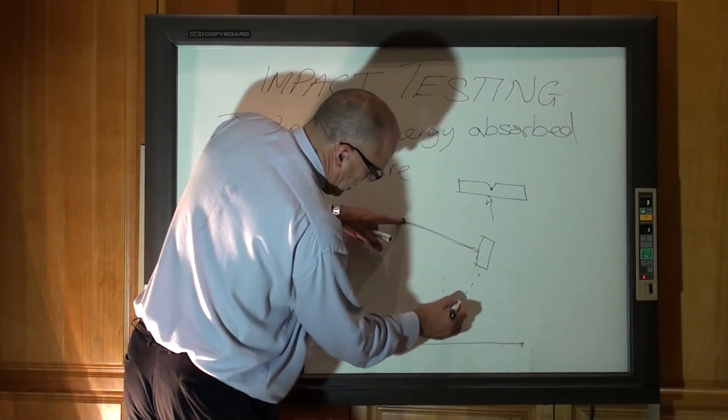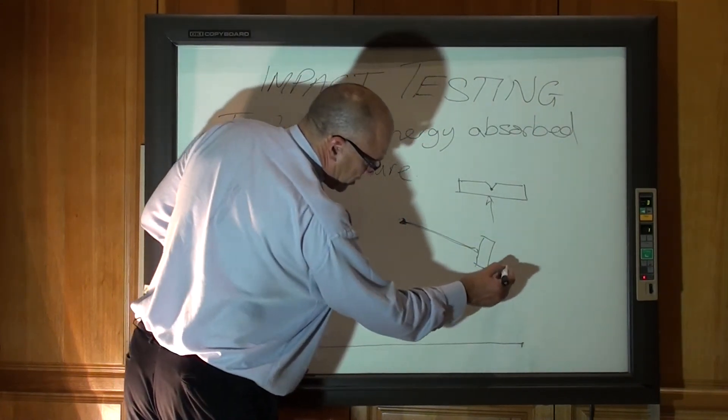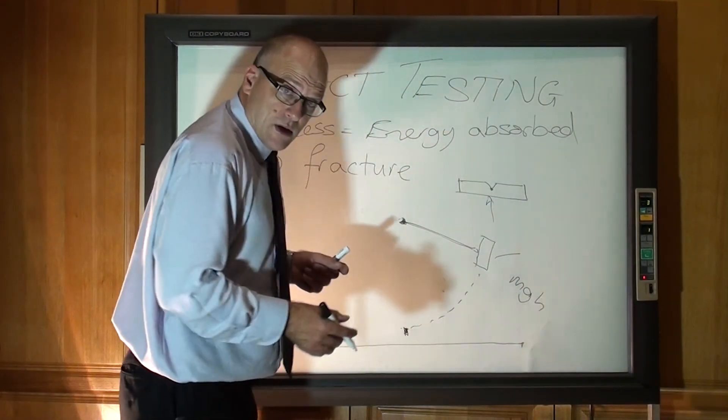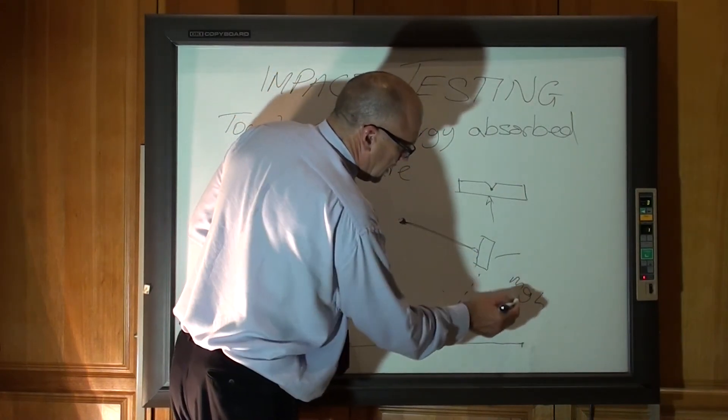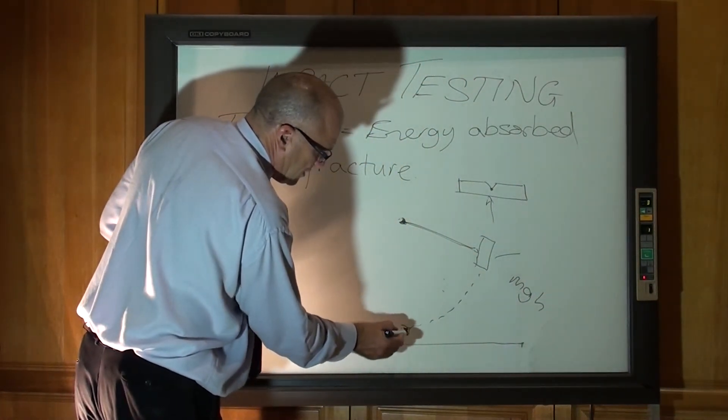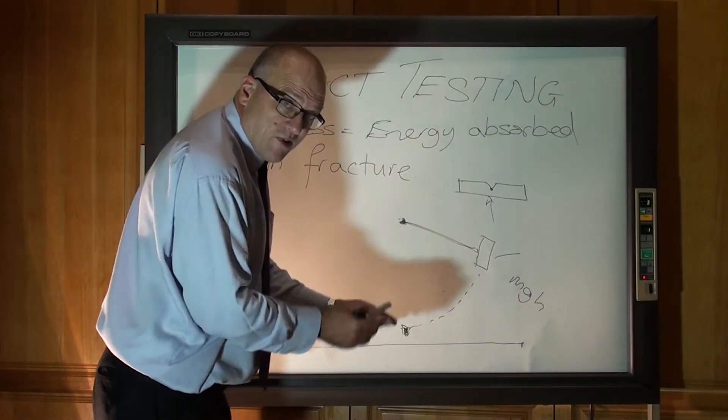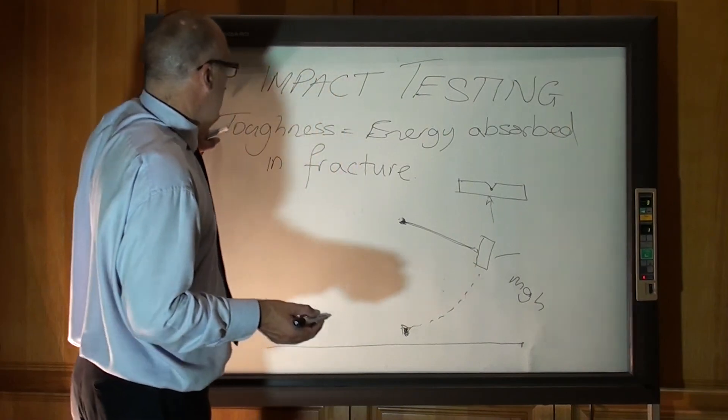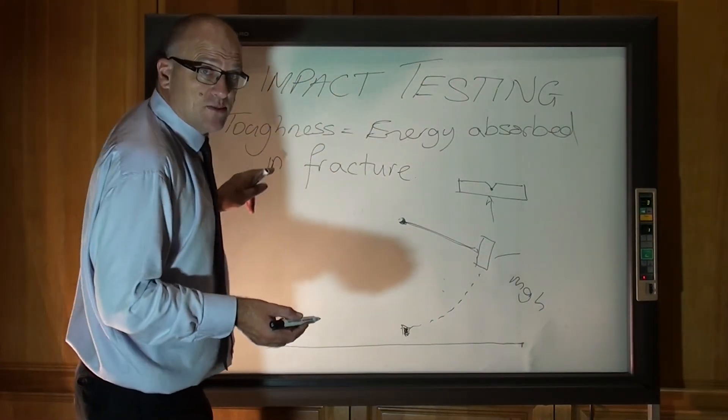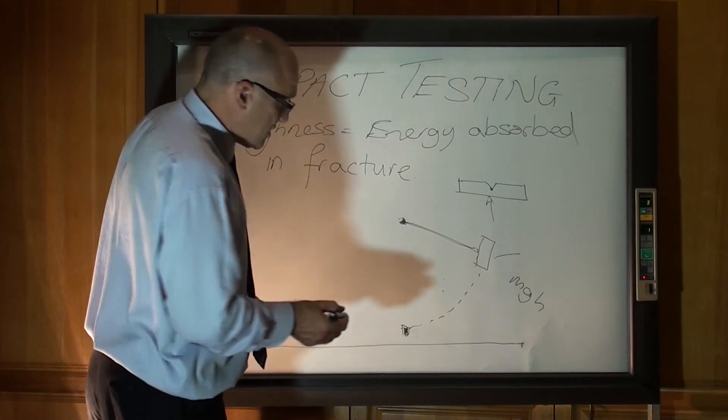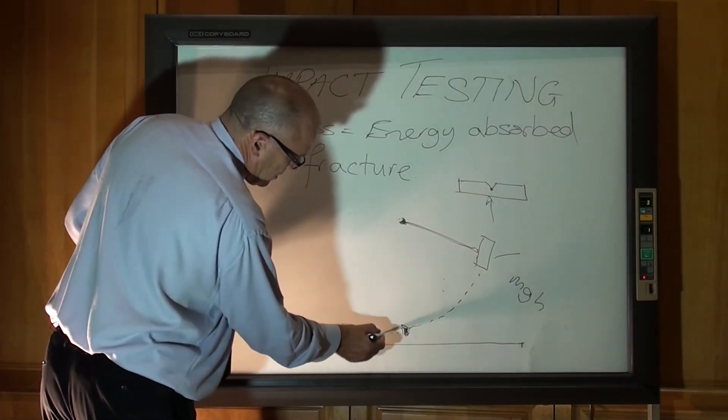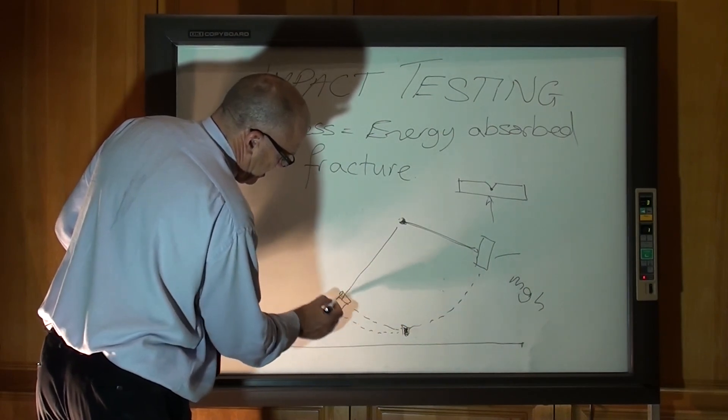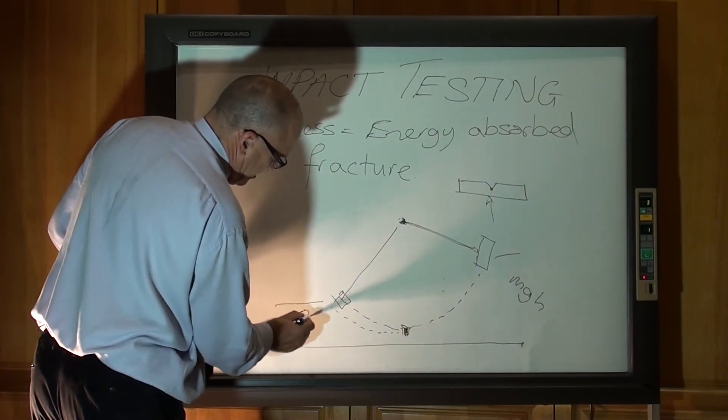This hammer is there. That's got a certain starting height. Potential energy is MGH. So that's its starting energy. Obviously it needs energy to break the specimen. The specimen absorbs energy when it's broken. Toughness is energy absorbed in fracture. So we just measure how far up the hammer goes on the other side. MGH.